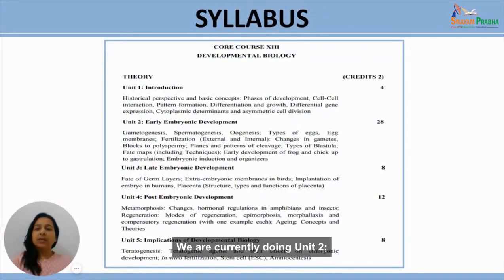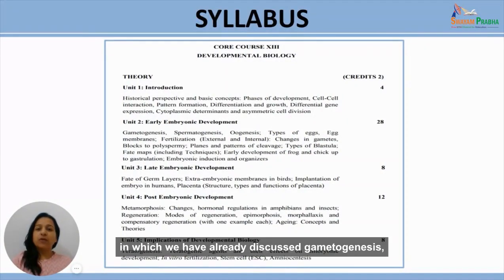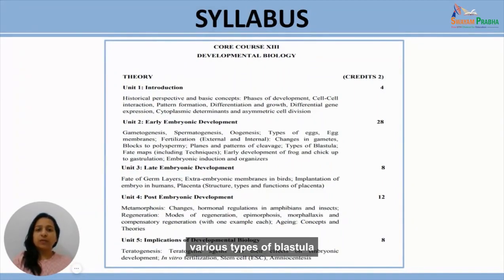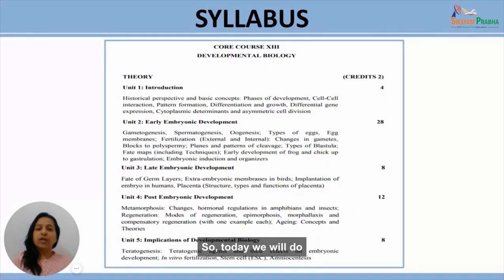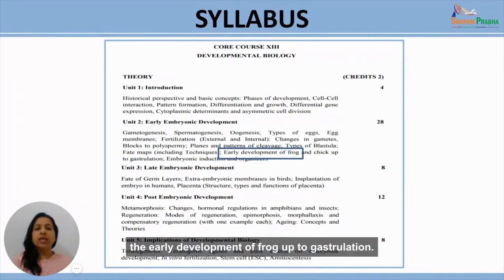We are currently doing Unit 2, Early Embryonic Development, in which we have already discussed gametogenesis, fertilization, planes and patterns of cleavage, various types of blastula and fate maps in the previous lectures. So today we will do the early development of frog up to gastrulation.